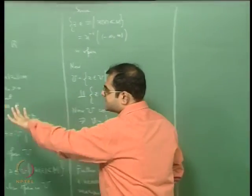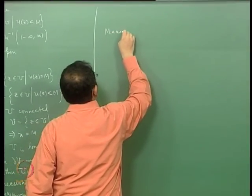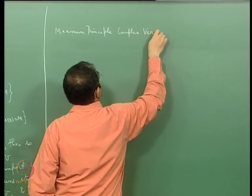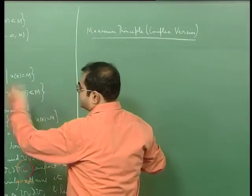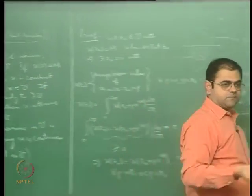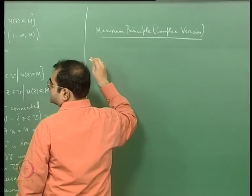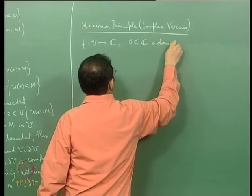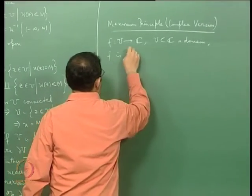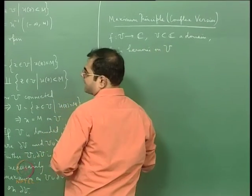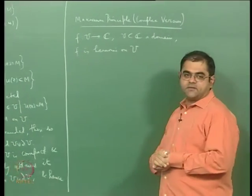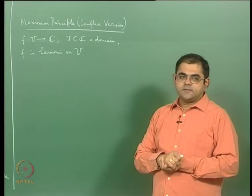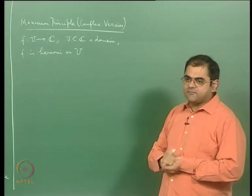Now let me go to the complex version. The statement is the same except that instead of a real-valued function we take a complex-valued function. So f maps from a domain U inside C, f is harmonic on capital U. A complex-valued harmonic function is one for which both the real and imaginary parts are harmonic.